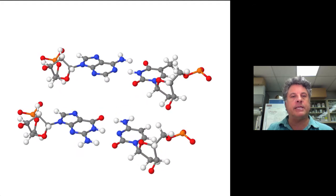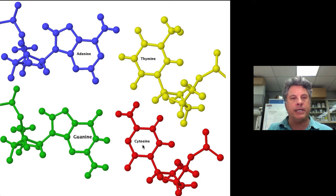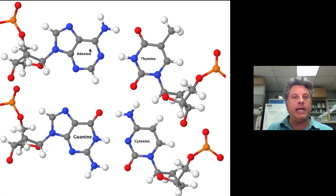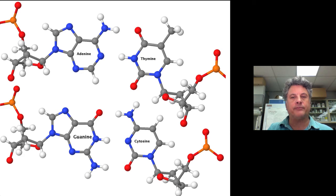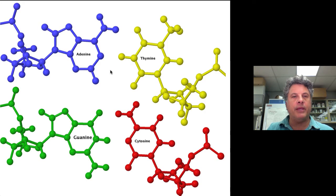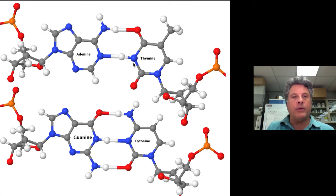The pairing of the nitrogenous bases in the interior of the helix is always adenine paired with thymine and guanine paired with cytosine. There are hydrogen bonds that connect the AT base pairs and the GC base pairs, as illustrated here. As discovered by Watson and Crick, there are two hydrogen bonds connecting adenine and thymine, whereas there are three hydrogen bonds connecting guanine and cytosine base pairs.